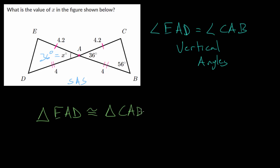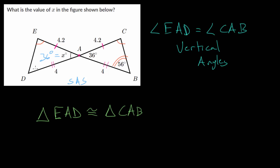From this, we can write that triangle EAD is congruent to triangle CAB. We can double check that this is correct and in the right order: CA and EA are equal, and DA and AB are equal. Since we now know the two triangles are congruent, we also know that angle E and angle C are equal, angle B and angle D are equal, and side length ED and CB are equal.